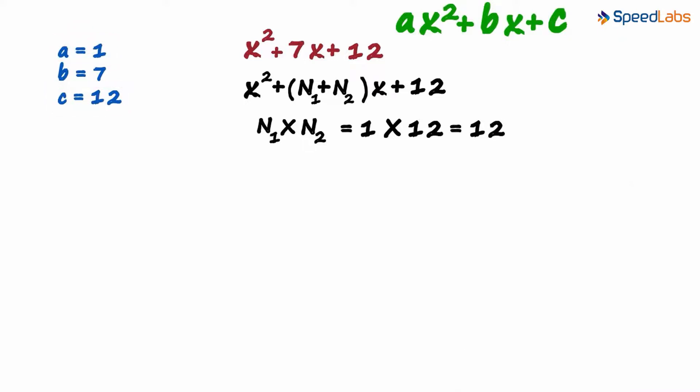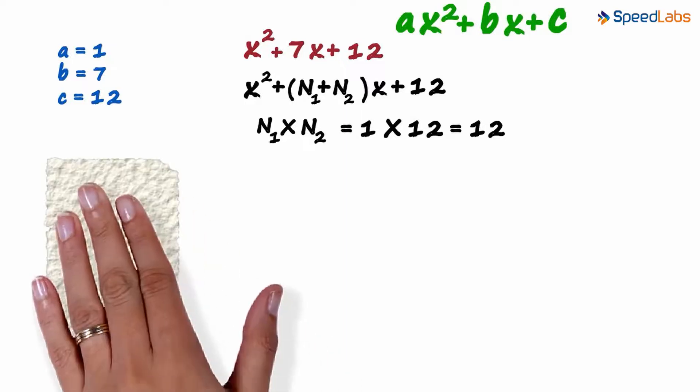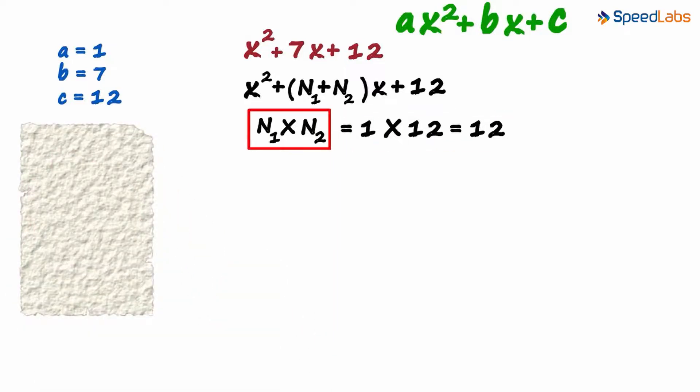So we have to think of two numbers such that their sum is 7 and their product is 12. Sometimes finding the combination of two such numbers is difficult. So the best way to look for such numbers is by taking a scratch paper and writing this as the product of two numbers.